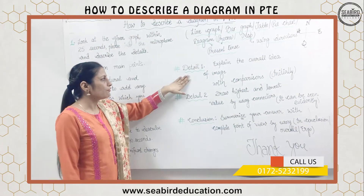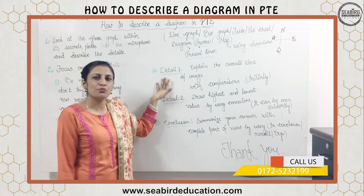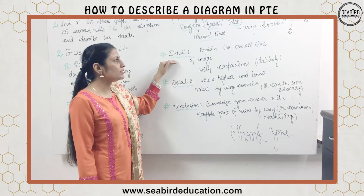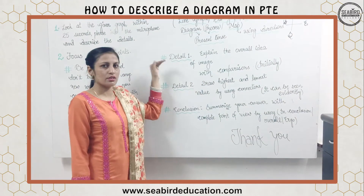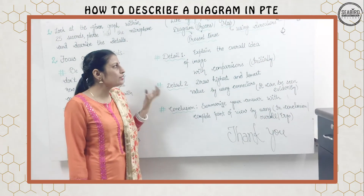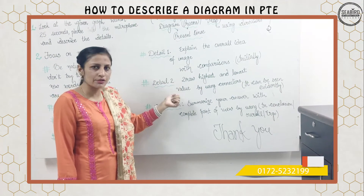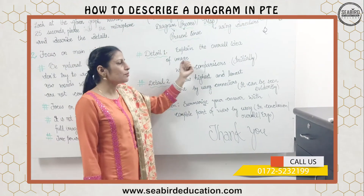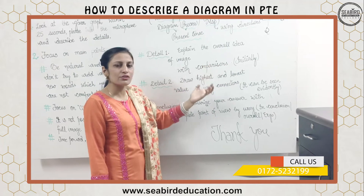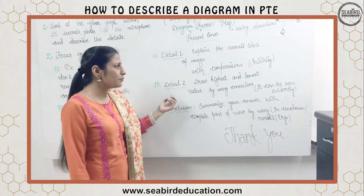After that, when you start with the 40 seconds of speaking, first of all try to elaborate the detail first — explain the entire idea of the image by using different comparisons. You can start speaking by using connectors such as: initially, firstly, prima facie, or in the beginning.